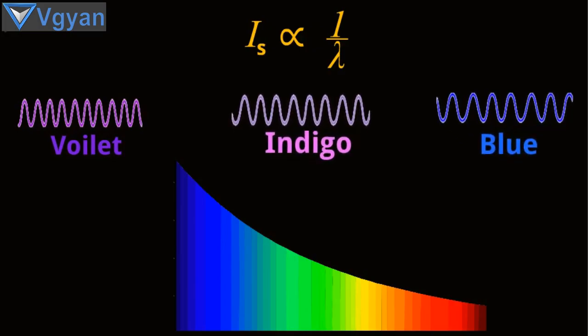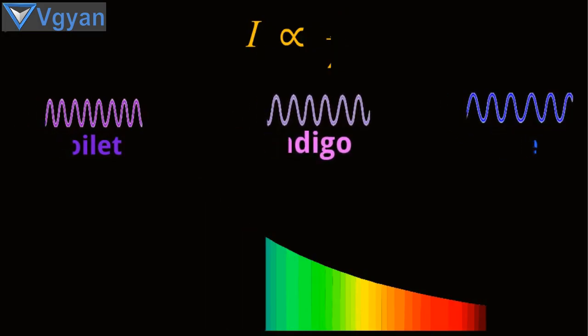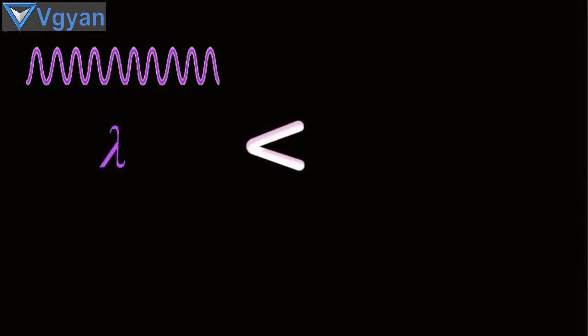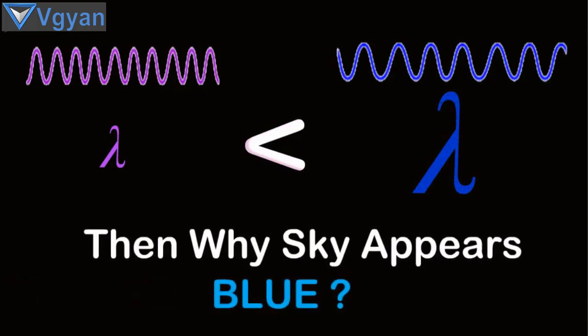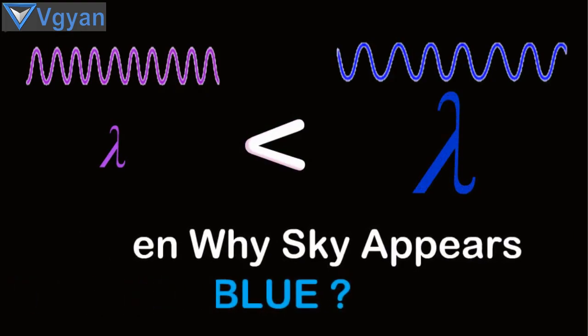So according to Rayleigh's law of scattering, violet, indigo, and blue light scatter the most through the air. The color which scatters most is more visible to us. Okay, but if it is true, then the sky should appear violet instead of blue, as violet and indigo light have smaller wavelengths than blue light.